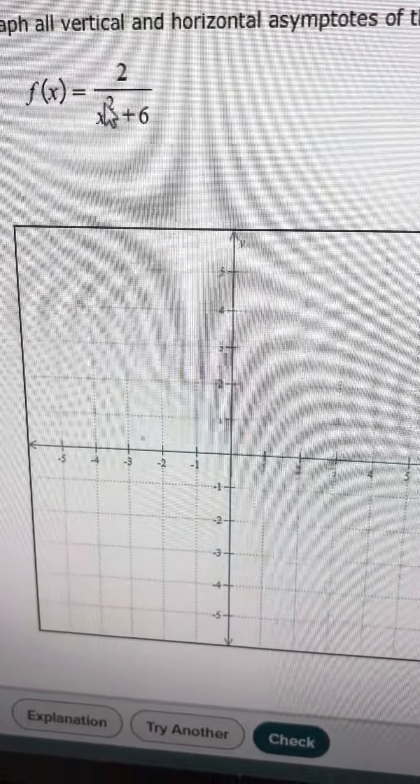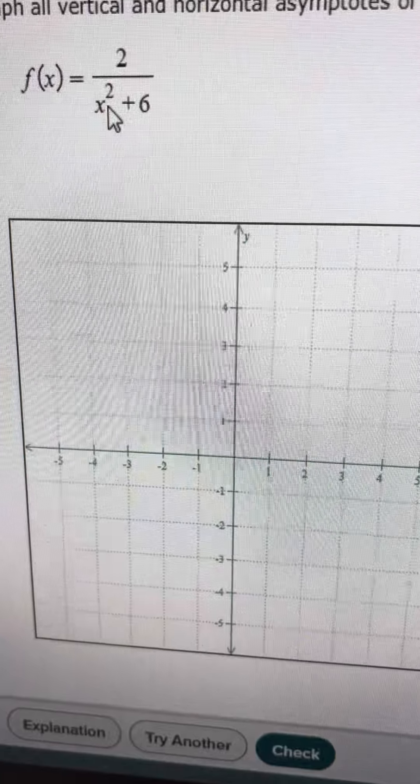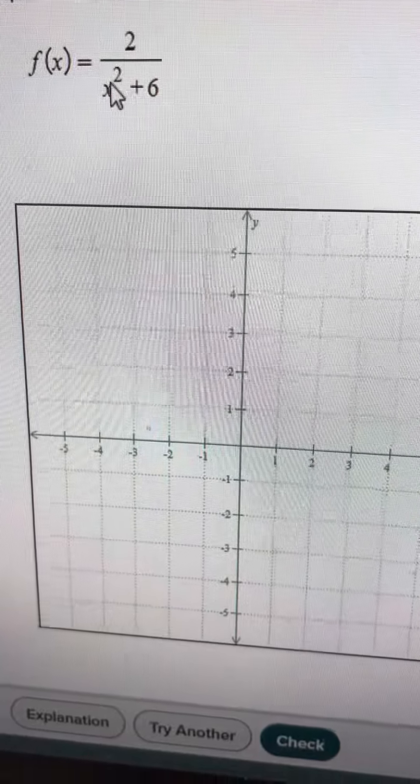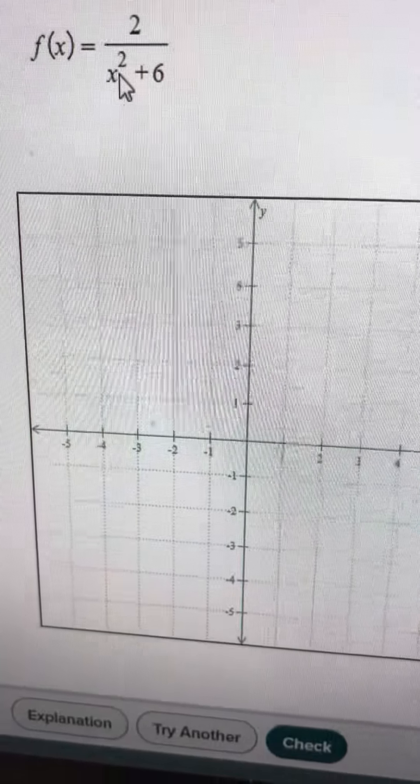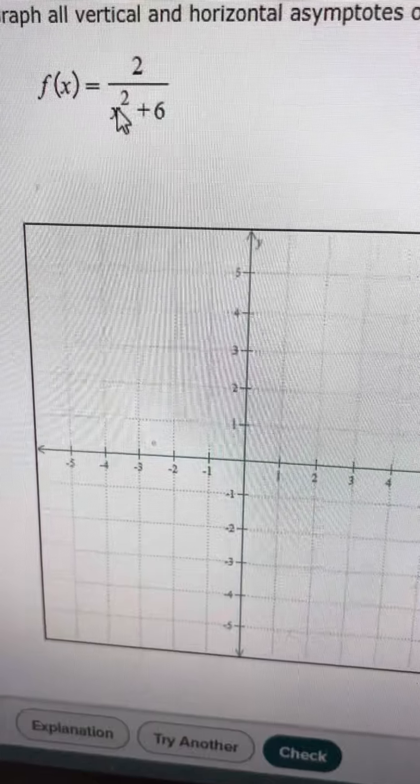Vertical asymptotes happen when the bottom is 0, but x squared plus 6 will never be 0 because that means x squared is negative 6, and that can't happen, so you're not going to have any vertical asymptotes.